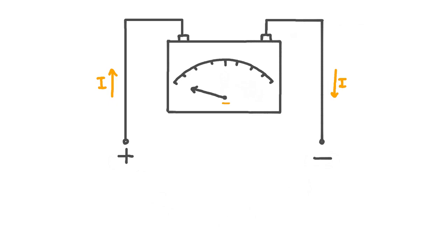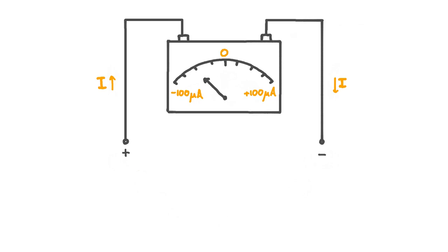If we reduce the size of the potential difference, thus reducing the size of the current, then we see that the needle backs away from the end of the scale. For small currents, the deflection of the galvanometer needle is proportional to the magnitude of the current. This means that a galvanometer can effectively measure the size of a current, as long as that current is small enough. Typically, a galvanometer will reach full-scale deflection for a current in the microamp or milliamp region.